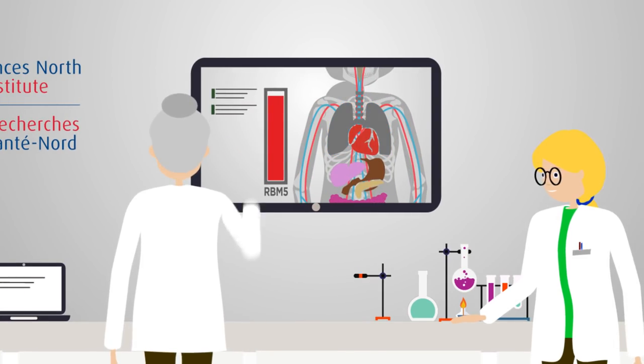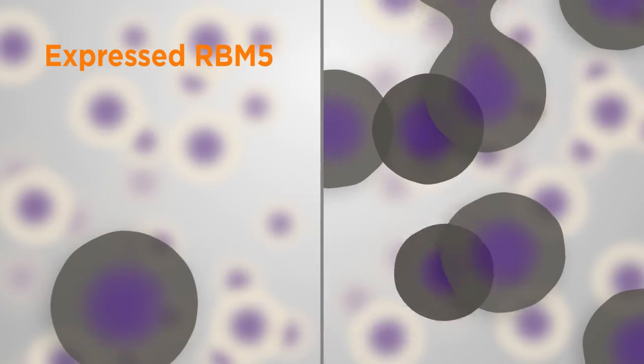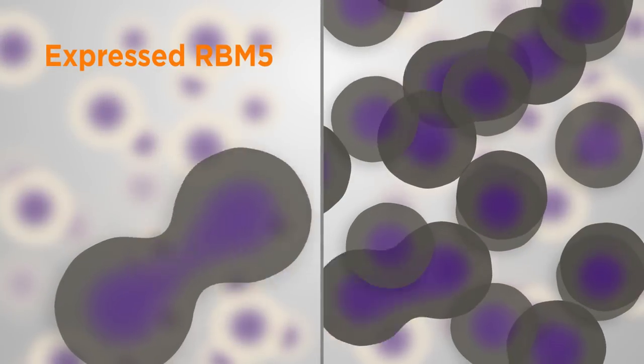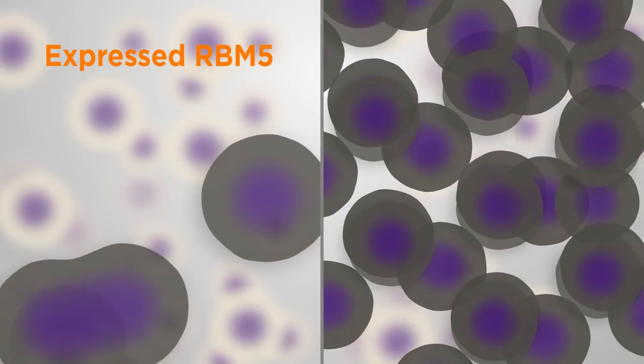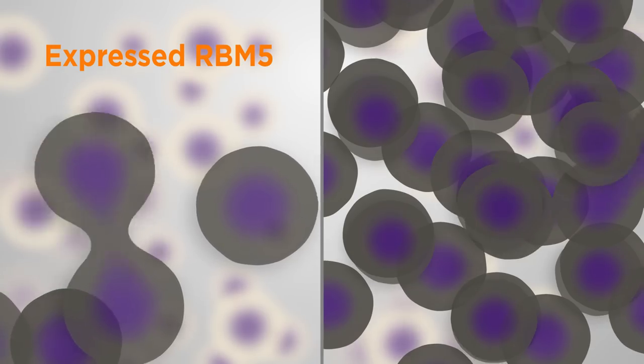The Sutherland lab previously found that lower RBM5 levels might be a key step in lung cancer development. Cell proliferation decreases in SCLC cells that express RBM5, and the cell's sensitivity to chemotherapy agents increases.